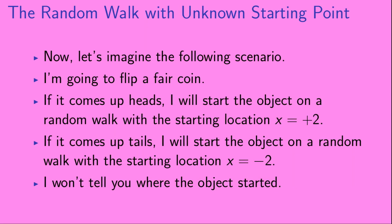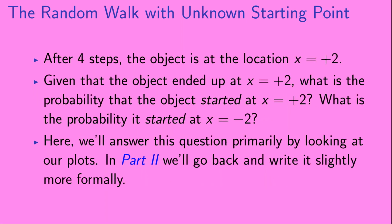Now let's imagine the following scenario. I'm going to flip a fair coin. If it comes up heads, I will start the object on a random walk with starting location x equals plus 2. If it comes up tails, I will start the object on a random walk with starting location x equals minus 2, and I won't tell you where the object started. After four steps, the object is at the location x equals plus 2. Given that the object ended up at x equals plus 2, what is the probability that the object started at x equals plus 2, and what is the probability it started at x equals minus 2?